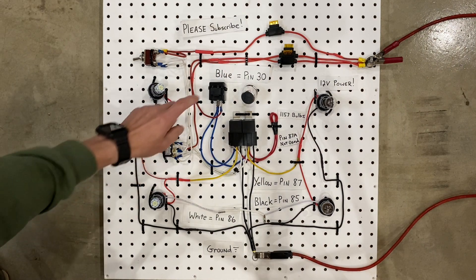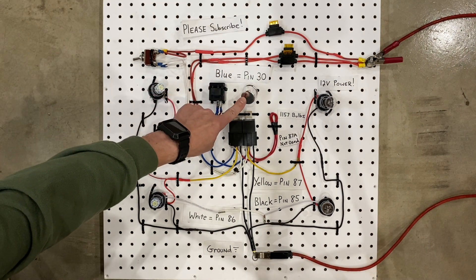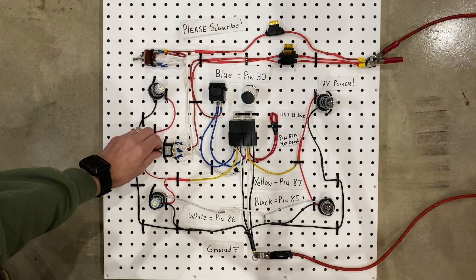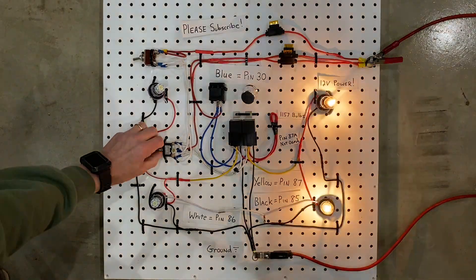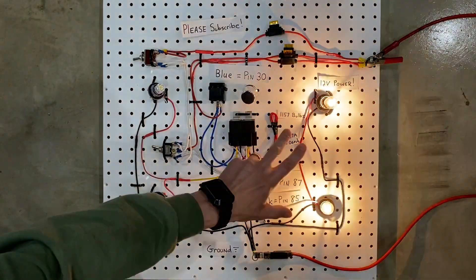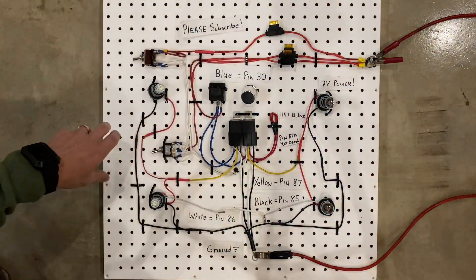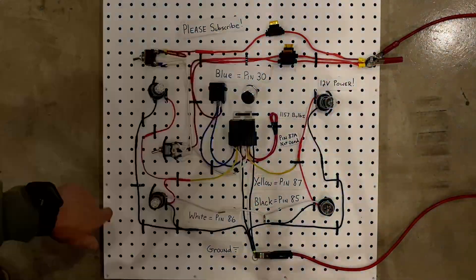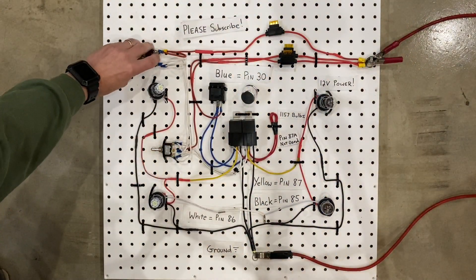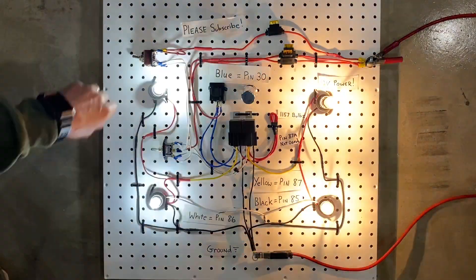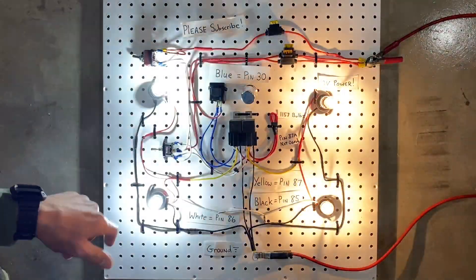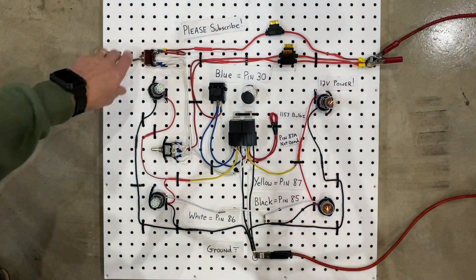All right, so now I have the LED flasher in the place of the old style flasher. We're going to flick the switch and see what happens. All right, so now the incandescent bulbs still flash normally and the LED bulbs flash normally. Now let's flick the hazard switch and see if that works.